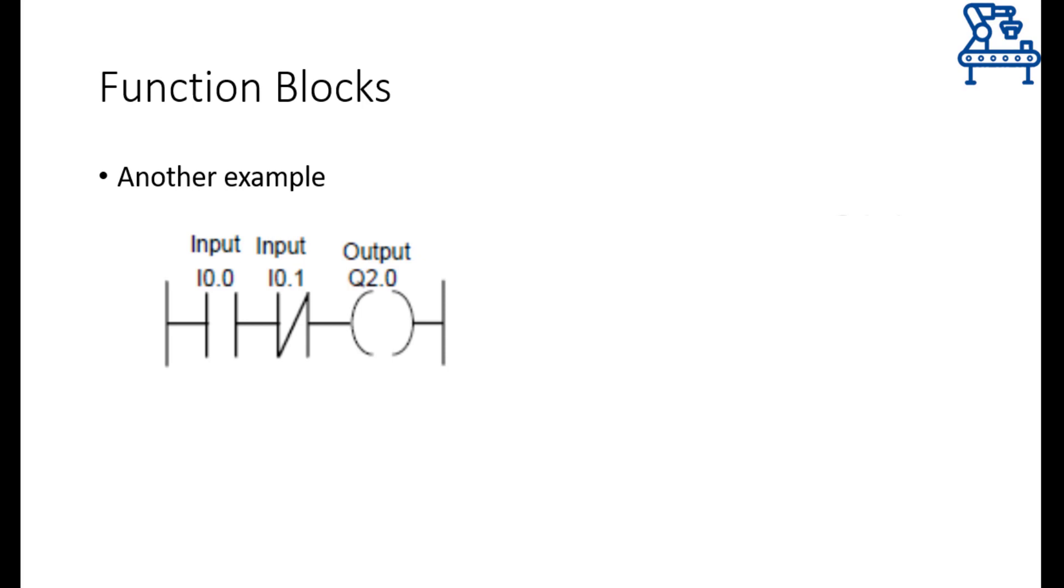Similarly, consider this diagram. Note that this ladder diagram is performing AND operation between two inputs but input I0.1 is normally closed contact. So, to implement this thing through function blocks, you just need to AND the two inputs but the input I0.1 should be inverted first. Therefore, this function block diagram represents the logic implemented by the ladder diagram shown over here.